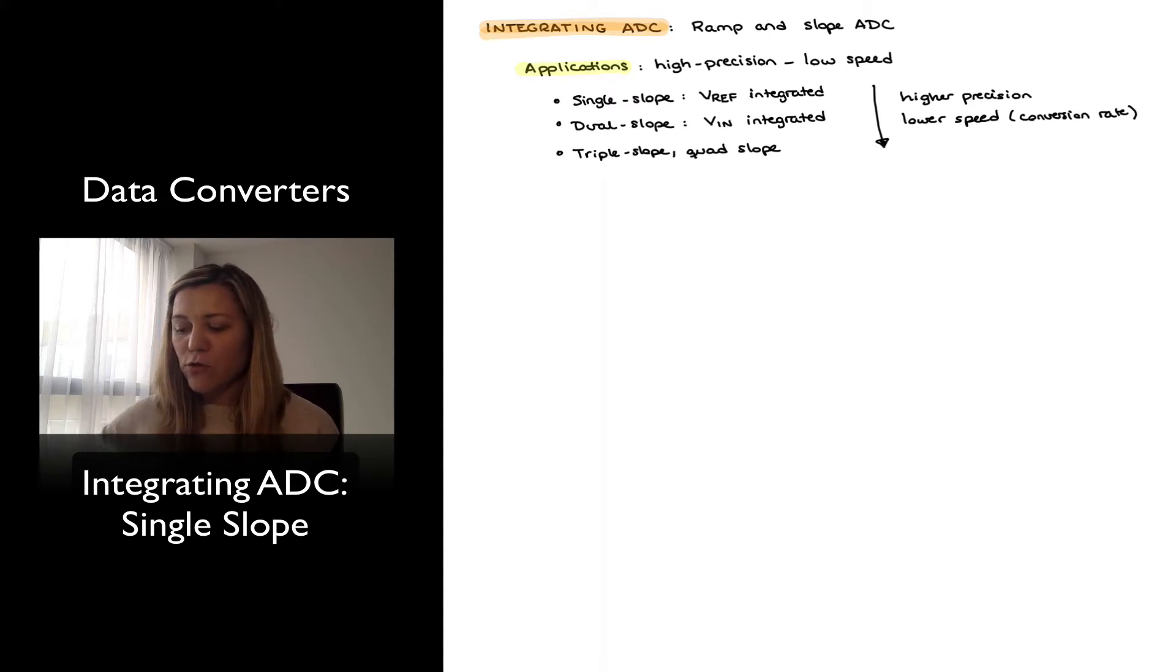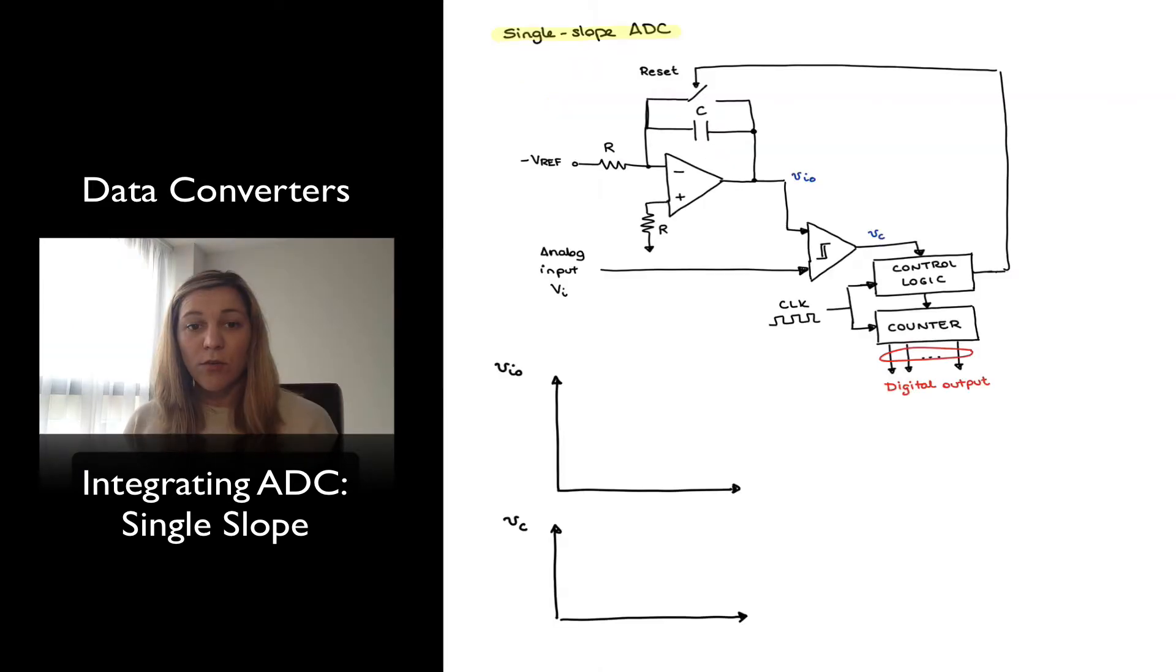We're going to focus on the single-slope and dual-slope versions. As we shall see, in the case of the single-slope, we have a reference signal that gets integrated. That's why it's called an integrating ADC. In the case of the dual-slope, the signal that gets integrated is the analog input signal. So let's start with the single-slope ADC.